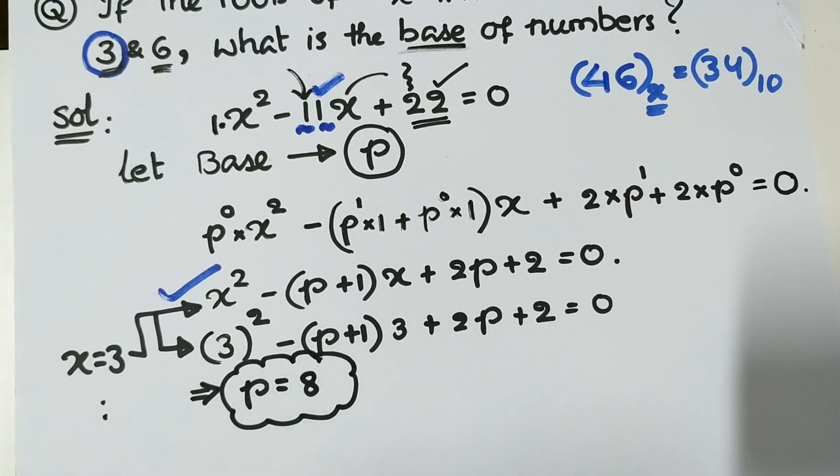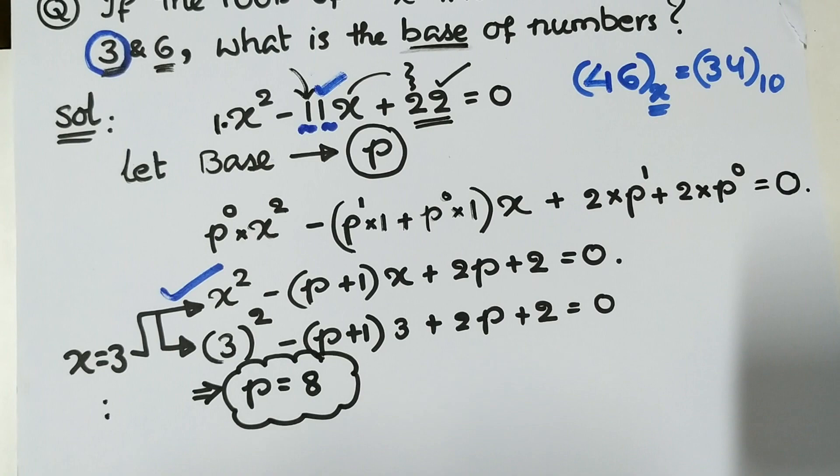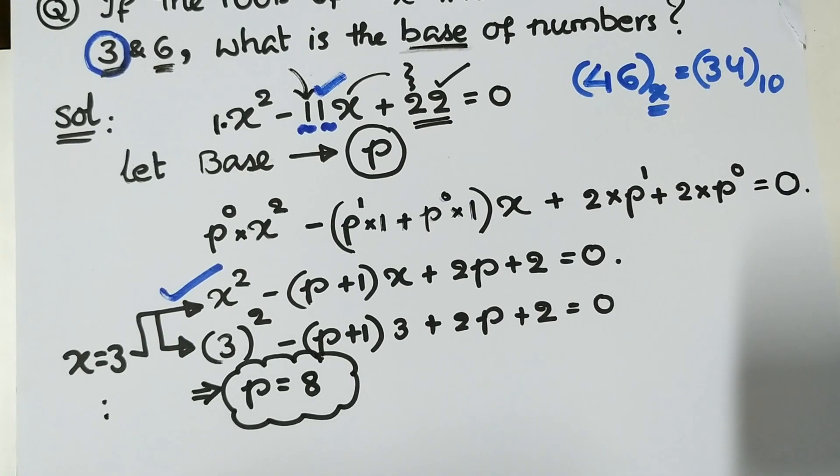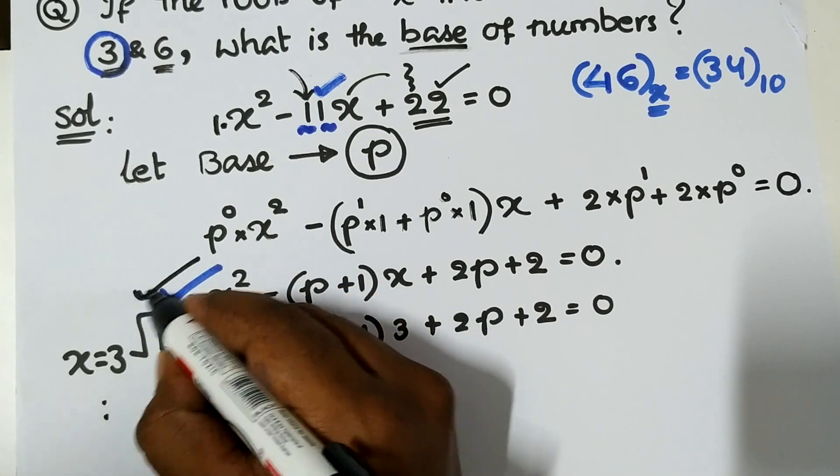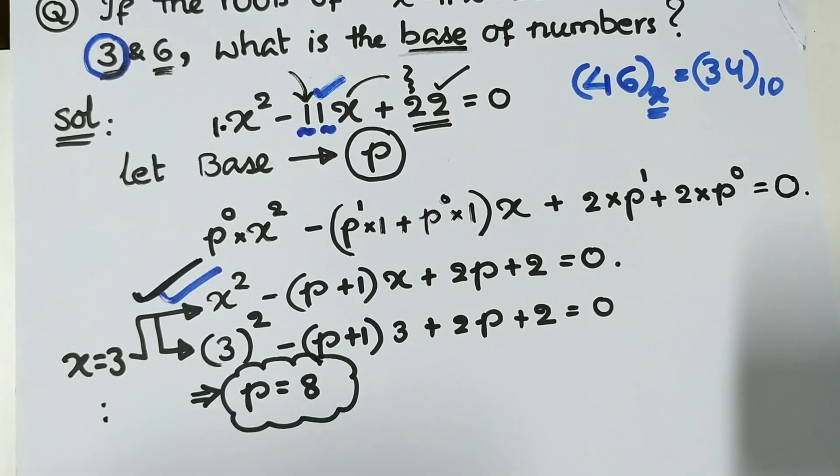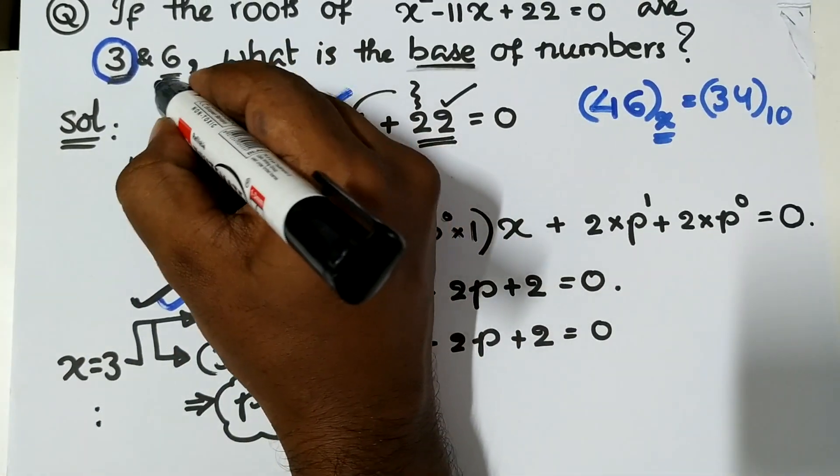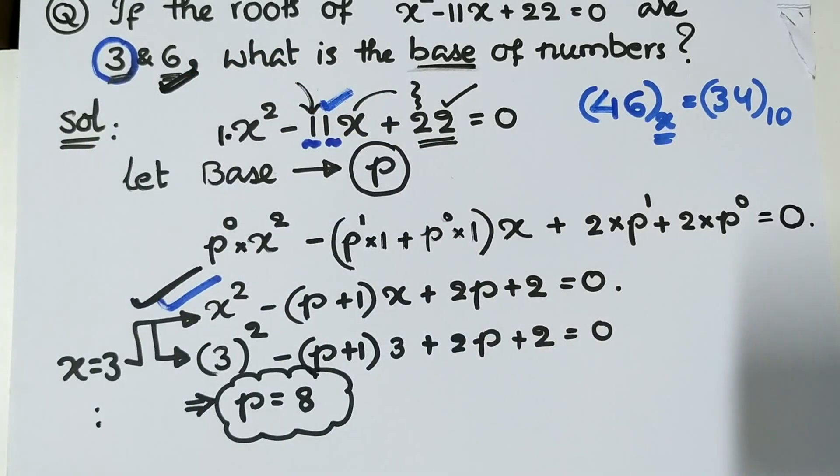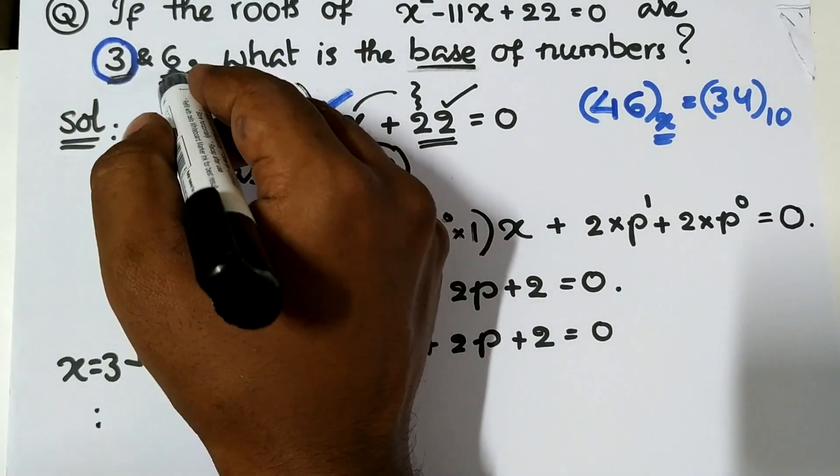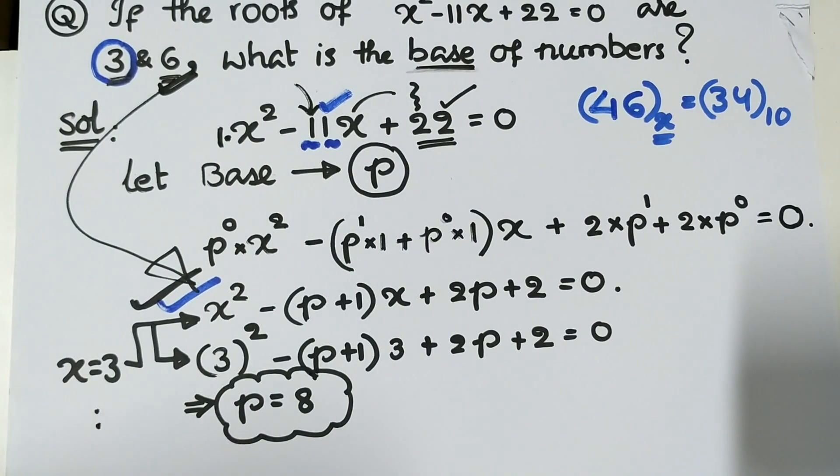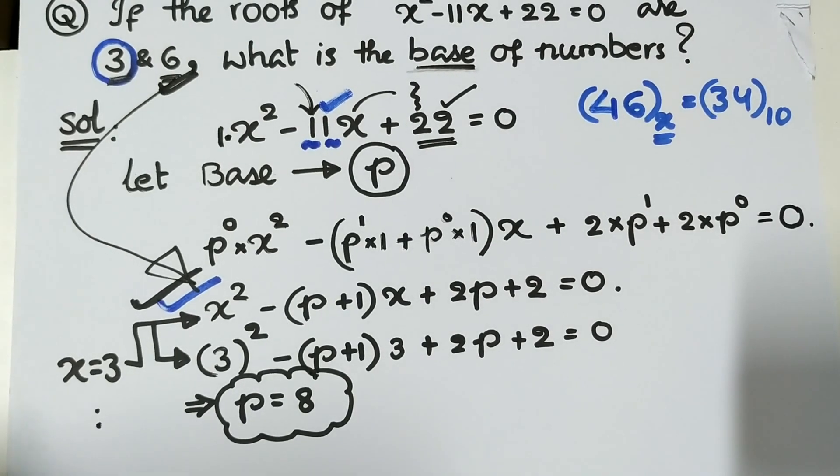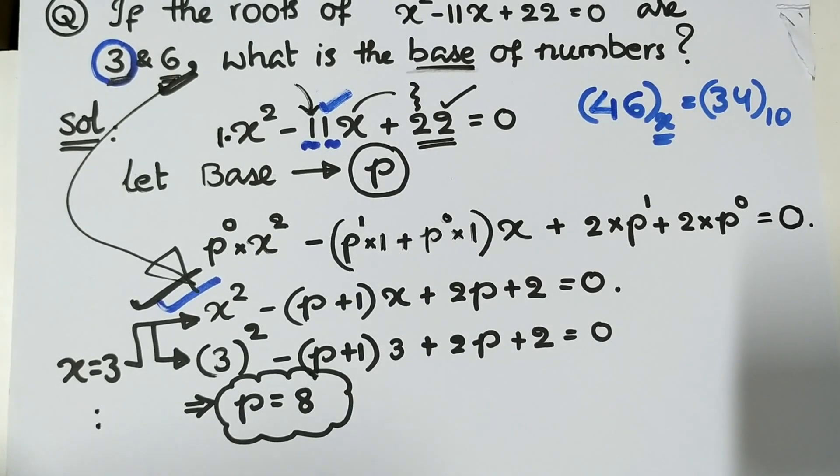Now you have to venture one step further by substituting x = 6 in the same equation. Check for this x = 6, plug in this 6 in this equation, and check whether or not we get again the base P as 8. Please do solve it.